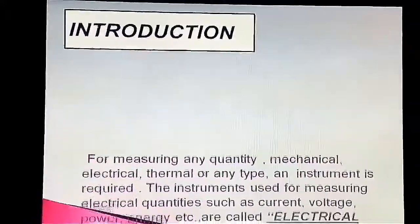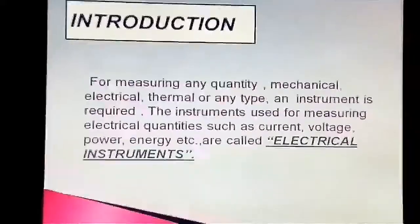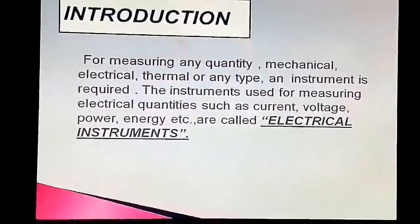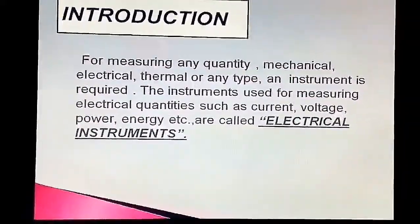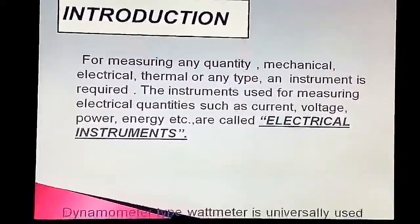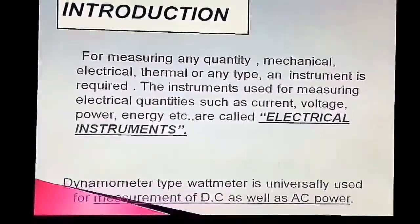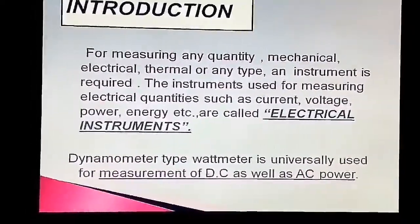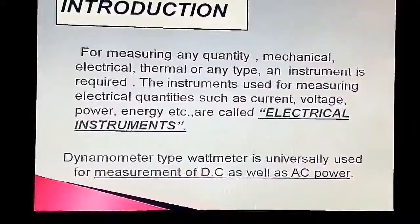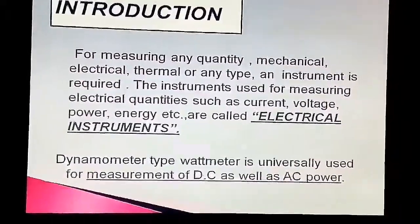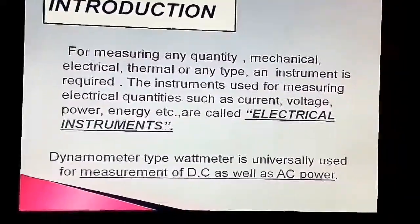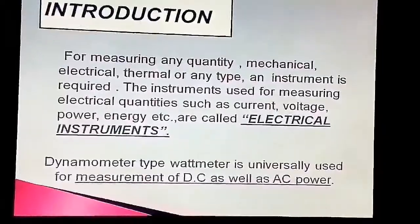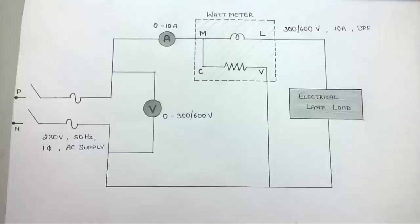For measuring any quantity — mechanical, electrical, thermal or any type — an instrument is required. The instruments used for measuring electrical quantities such as current, voltage, power, energy, etc. are called electrical instruments. The dynamometer type wattmeter is usually used for measurement of both DC and AC.